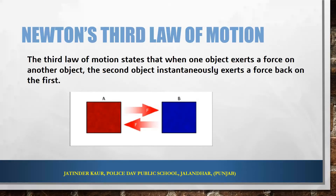The third law of motion states that when one object exerts a force on another object, the second object also instantaneously exerts a force back on the first. The force exerted by object A on B is denoted as F-AB, and then B will also exert an equal force F-BA — force exerted by B on A — but in the opposite direction.